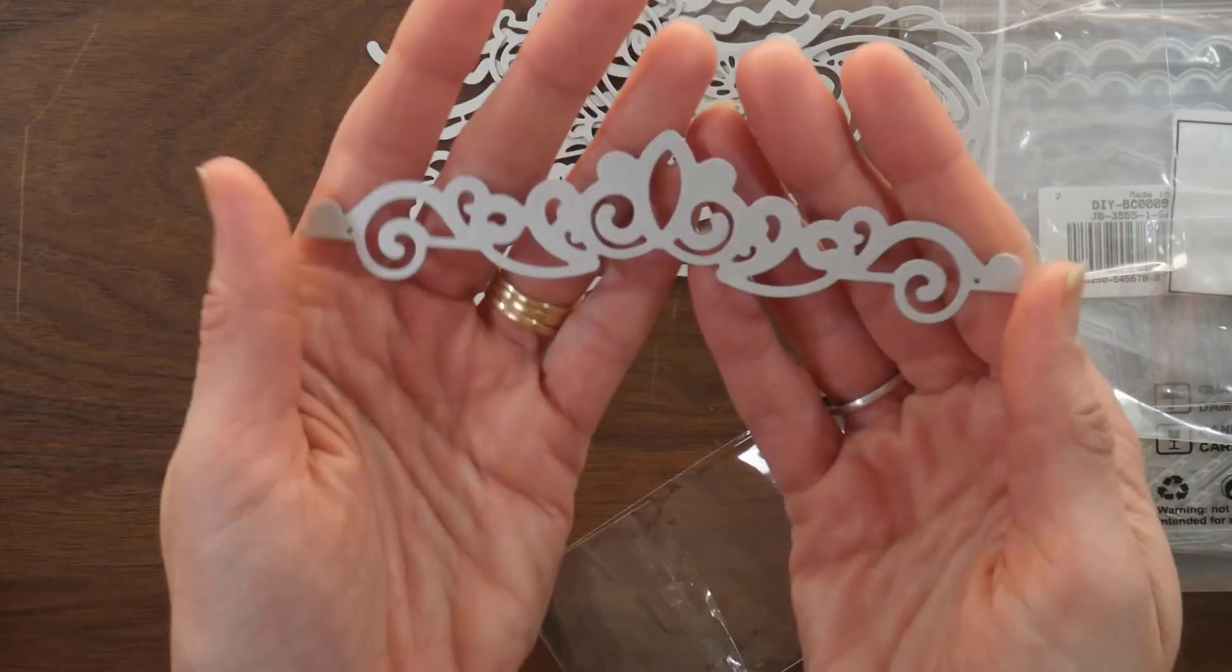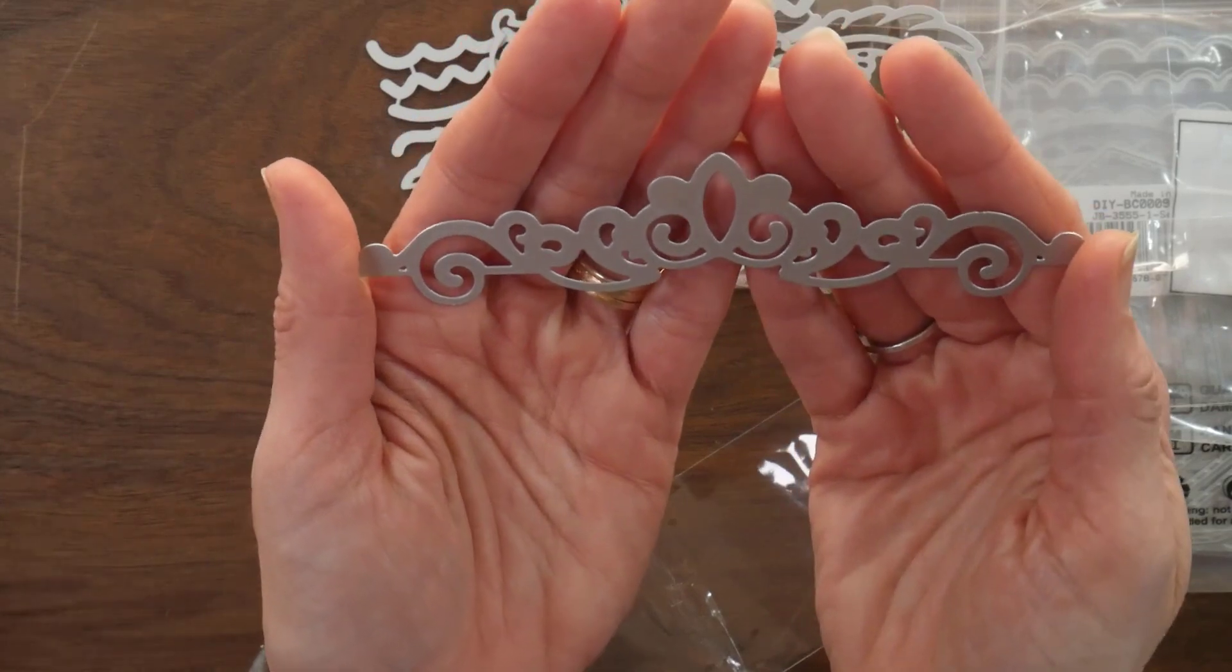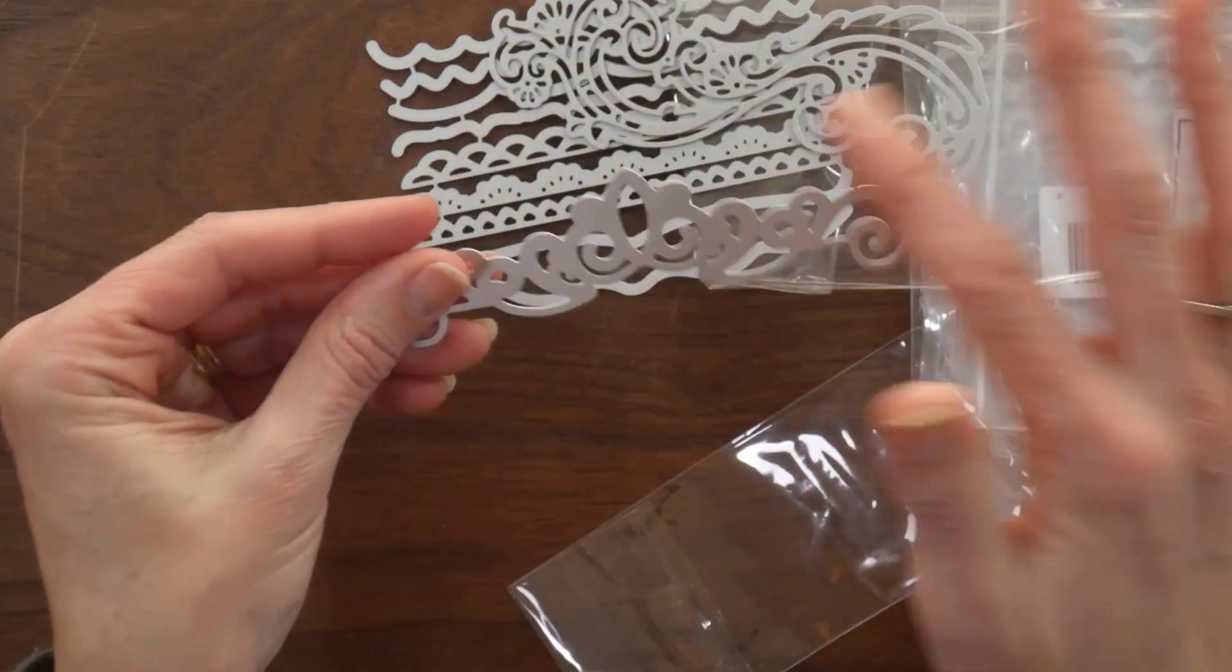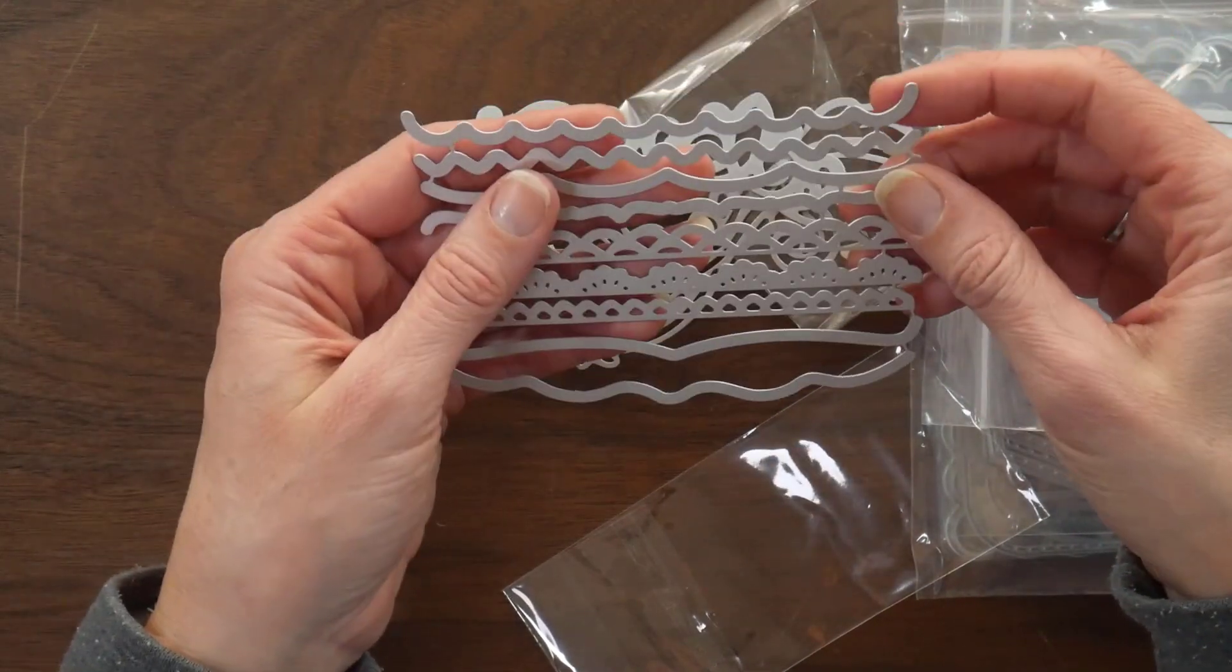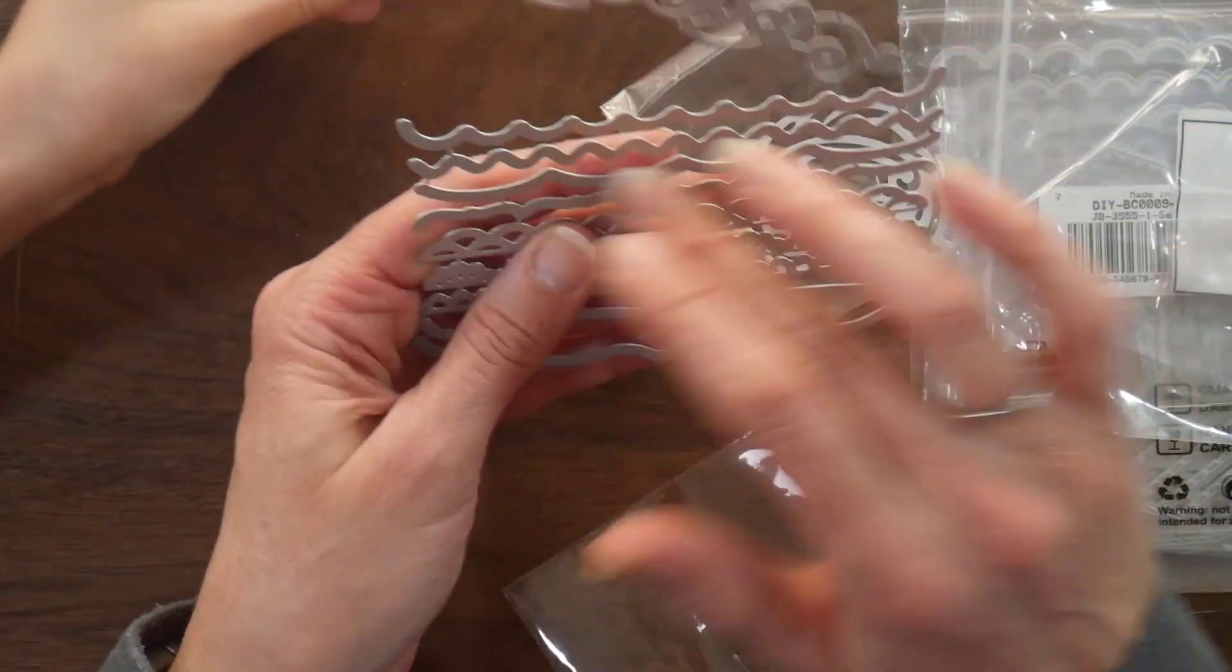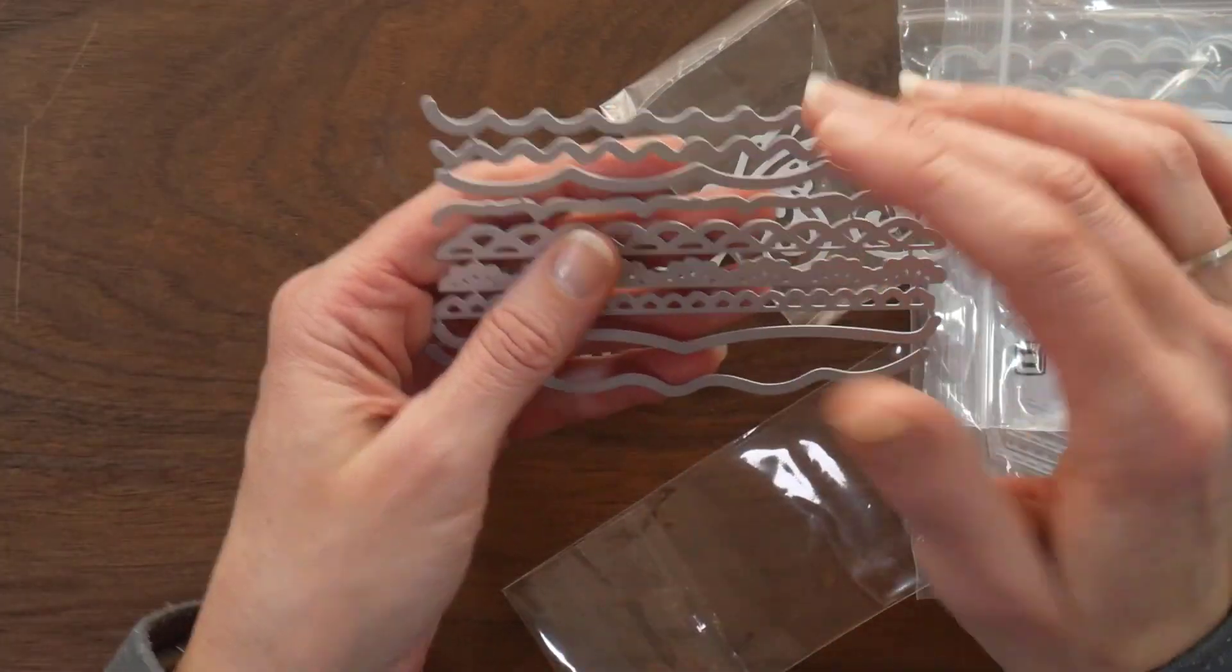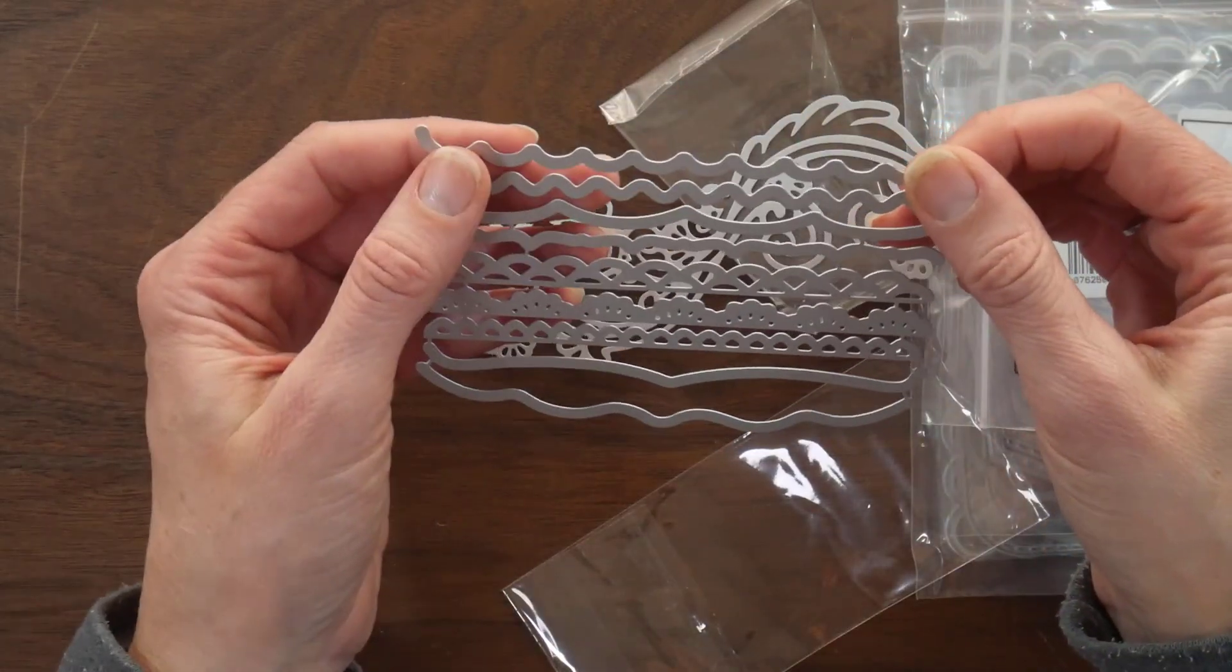And so then here's this one, which looks kind of like the top of a crown. Daniela Hayes uses these a lot when she does her mini albums. And I know a lot of people use them to get a decorative border.